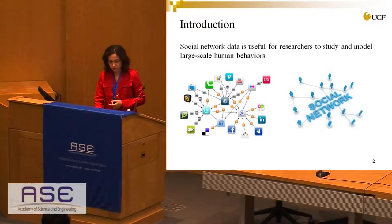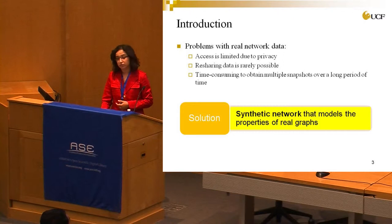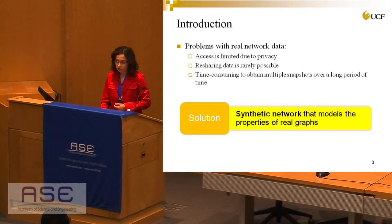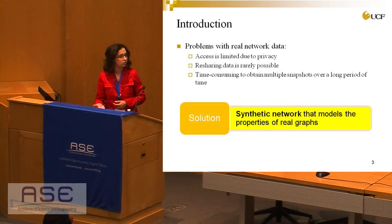One problem is that access to data is limited due to privacy reasons. In addition, if we have this data, resharing it is rarely possible. Also, it becomes time-consuming to obtain multiple snapshots of data, especially for studies that need this kind of network over a long period of time. Thus, the solution is to have a synthetic network that models the properties that appear in real graphs.